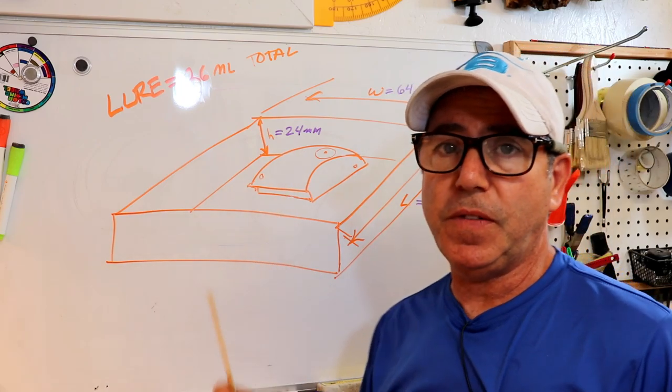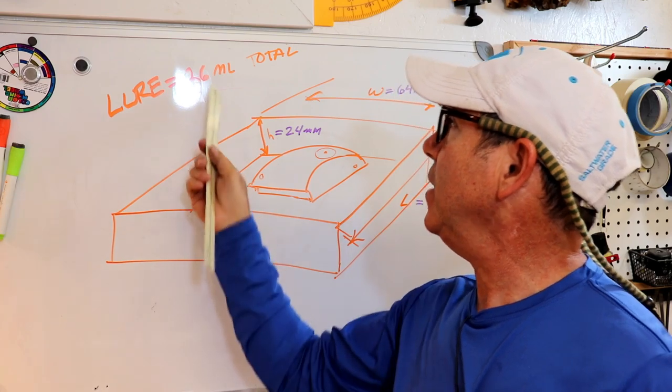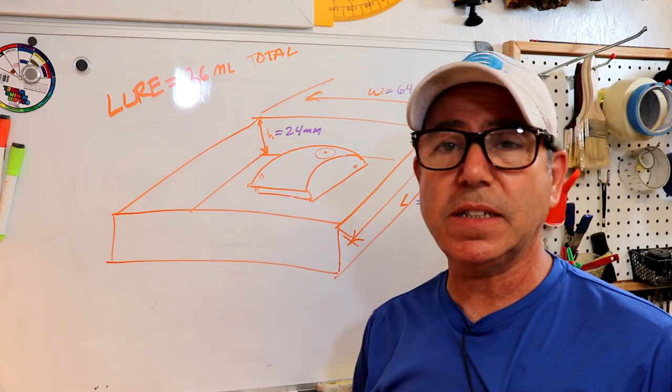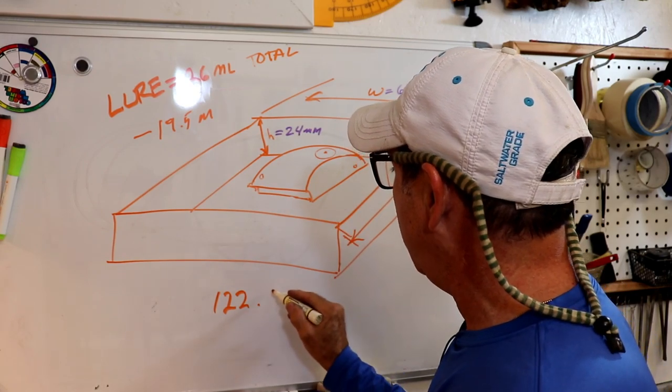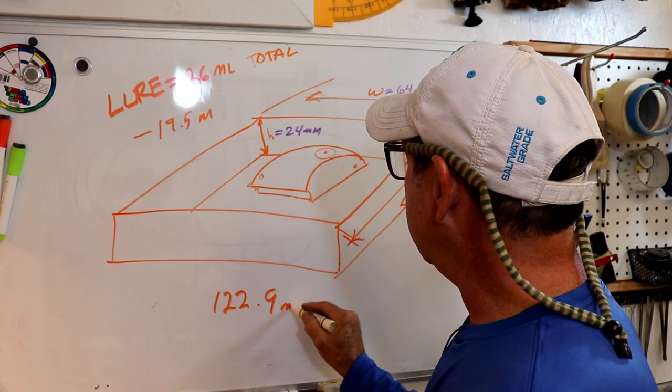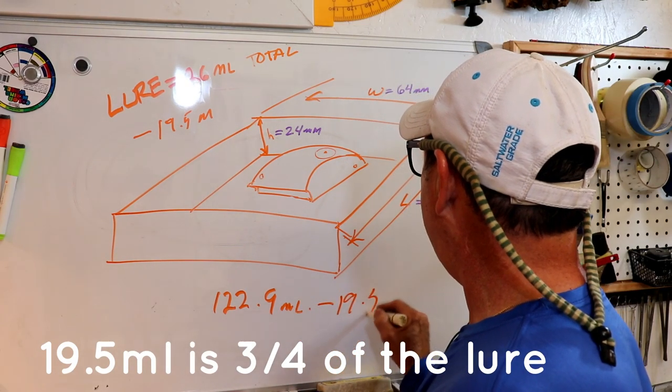And the only thing that I have to do now is subtract the volume of the lure, the part of the lure that's sticking out of the clay. And I know that my lure is 26 milliliters. So when you multiply those dimensions out you get 122.9 milliliters.